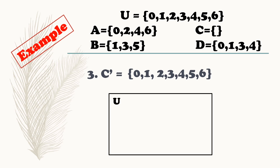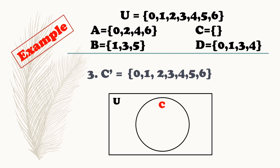Again, represent that into a Venn diagram. So anong nasa loob ng bilog natin? Meron ba? Wala kasi empty set tayo. So lahat noong nasa labas ng bilog, that is the complement of set C: 0, 1, 2, 3, 4, 5, 6.